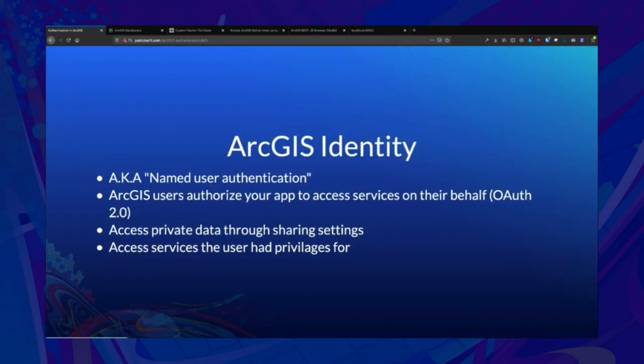For ArcGIS identities — as an overview, you may have heard this called named user authentication in the past, or OAuth 2. We're trying to clarify: OAuth 2 is really a protocol for authorization. ArcGIS users and your application will use OAuth 2 — users will authorize your application and you'll get a token which represents that user's ArcGIS identity. With that identity you can access any private data that user has access to, and use services that user has the privilege to access.